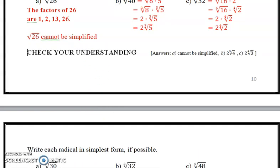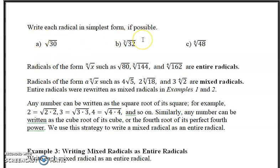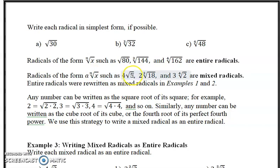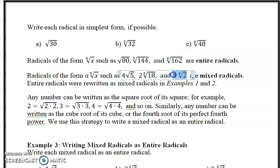Just to check your understanding, radicals of the form — the nth root of x, such as square root of 80, cube root of 144, and cube root of 162 — are called entire radicals. Radicals of the form with a coefficient out front, such as 4 times square root of 5, are called mixed radicals. That's the simplified version of the square root of 80. And 2 times cube root of 18 is the simplified version of cube root of 144. Entire radicals were written as mixed radicals in both examples 1 and 2.